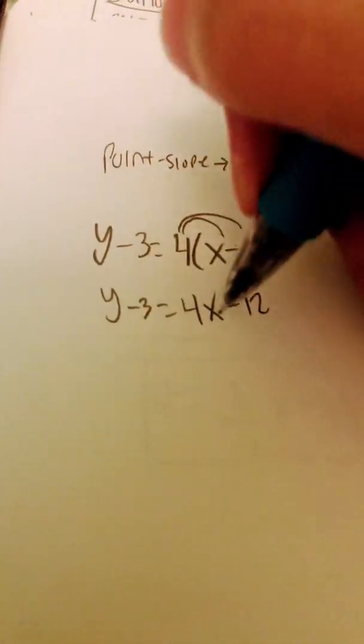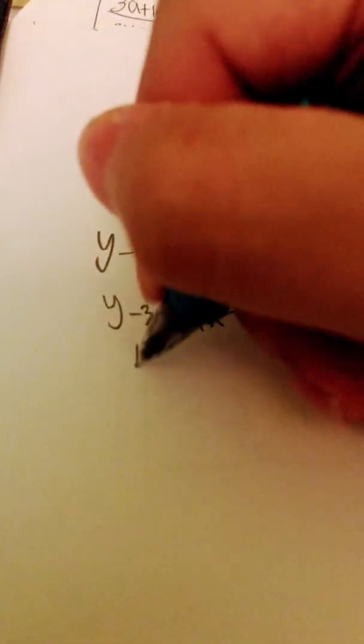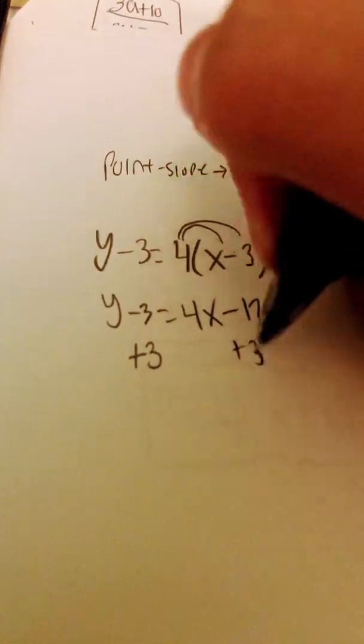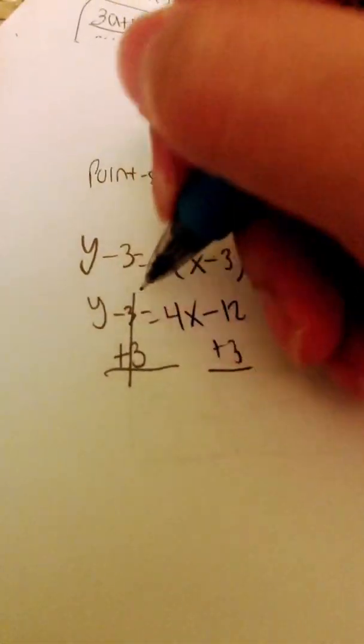And then I'm going to go ahead and add 3 to both sides. So I'm going to say plus 3 on both sides. And so then I cancel this out.